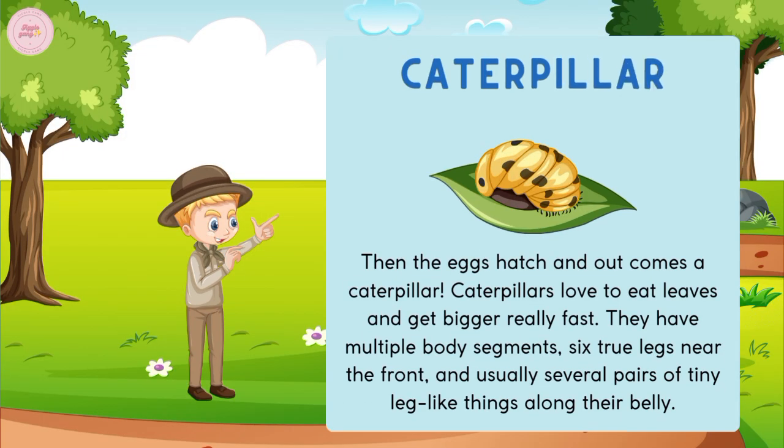Then the egg hatches and out comes the caterpillar. Caterpillars love to eat leaves and get bigger really fast. They have multiple body segments, six true legs near the front, and usually several pairs of tiny leg-like things along their belly.